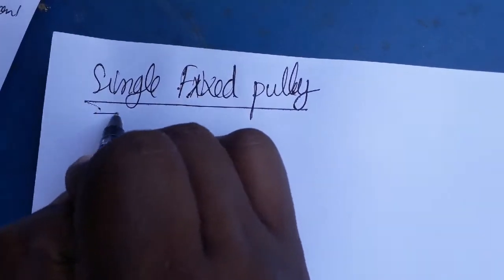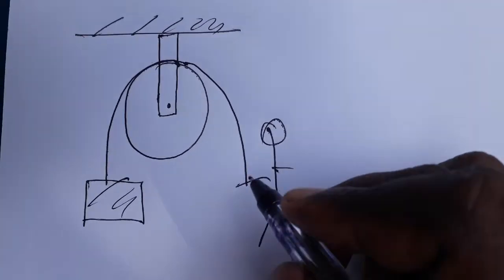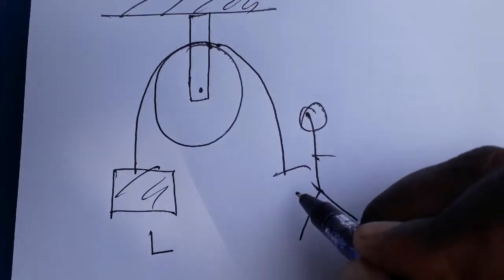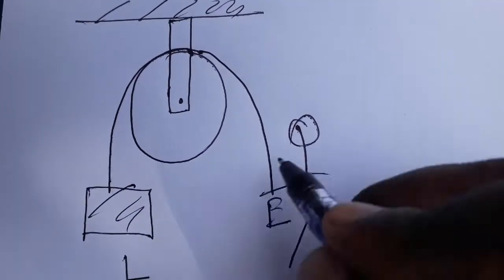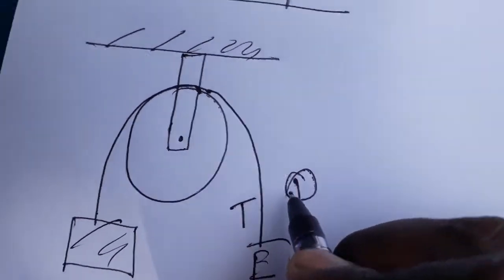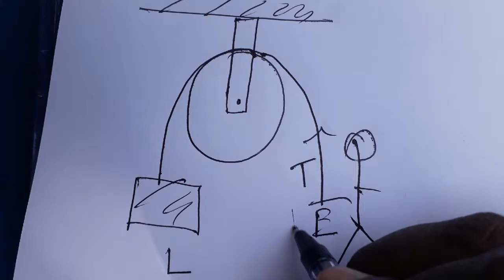Hello students, today we are going to see how the single pulley works. One person is pulling the object, which is the load, and we can call this the effort. Wherever you are applying the force we call it effort. Here only tension is going to create upwards. You are pulling downwards, tension will be creating upwards, load will be acting downwards.